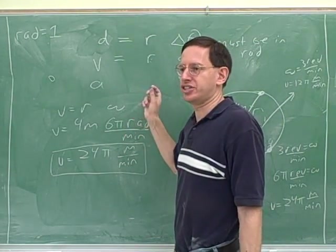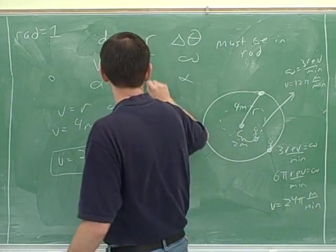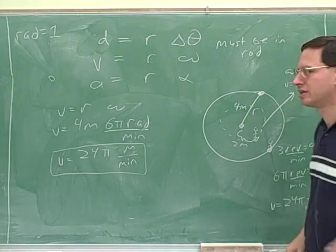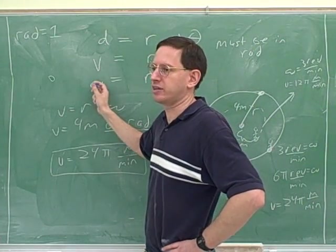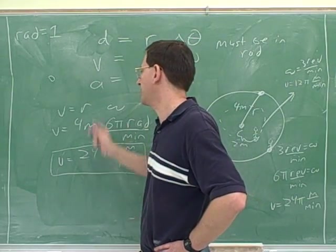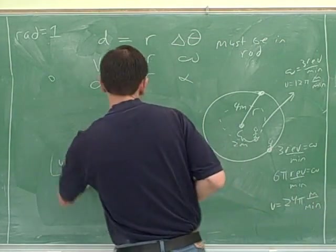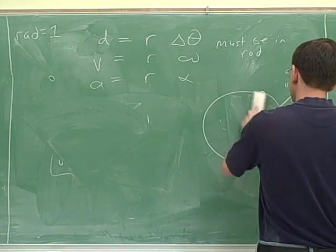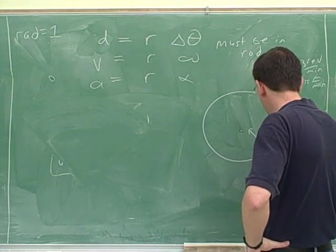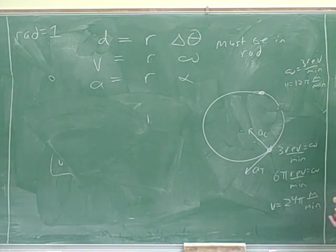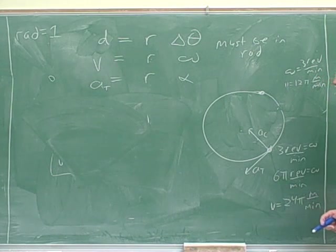Now, the equation for acceleration is analogous. So take a guess. What would be the equation that relates A and alpha? A equals R alpha. That's right. Now, this is a little bit tricky here. Now that we're talking about acceleration, now that we're talking about linear acceleration, we have to go back to what we talked about earlier, and remember there's a tangential and a centripetal acceleration. The centripetal acceleration, we know, is towards the center. And the tangential acceleration is tangent to the circle. Well, this gives us the tangential acceleration. This equation gives us the tangential acceleration.